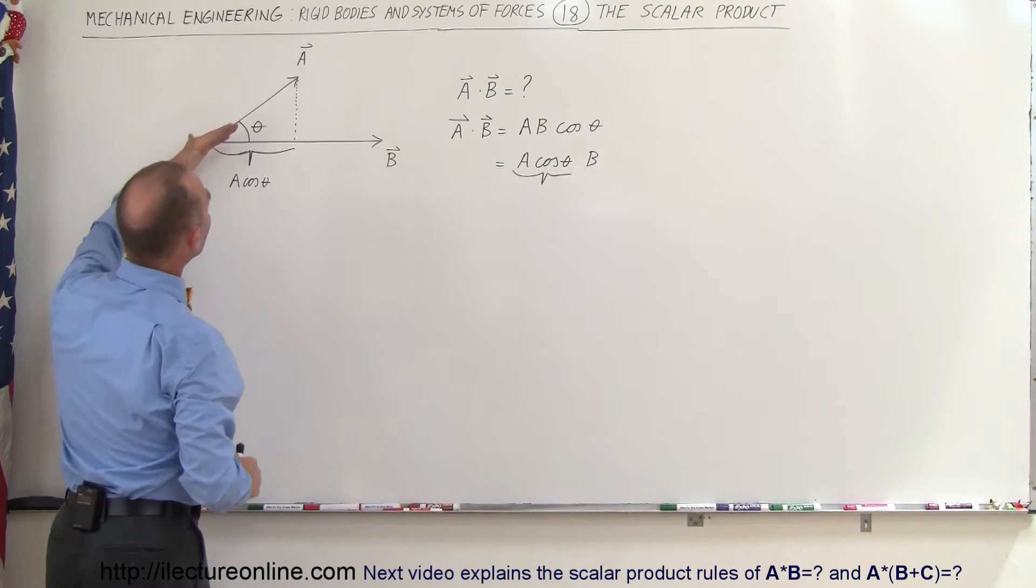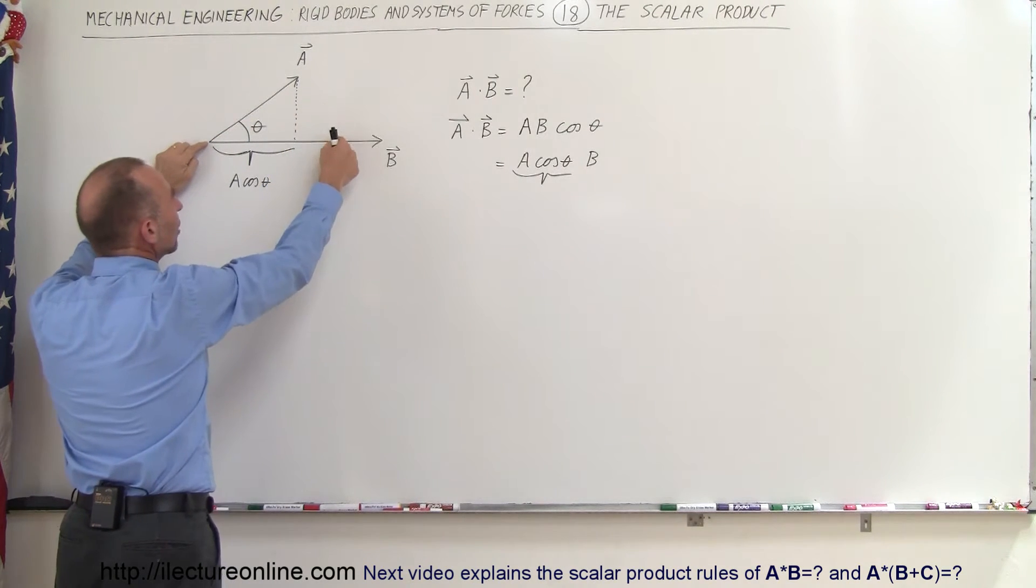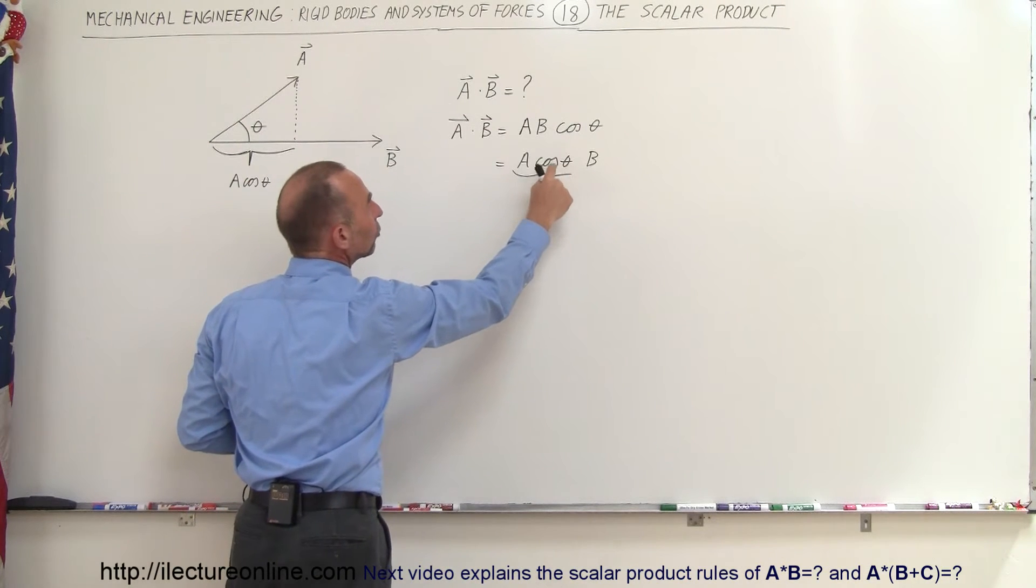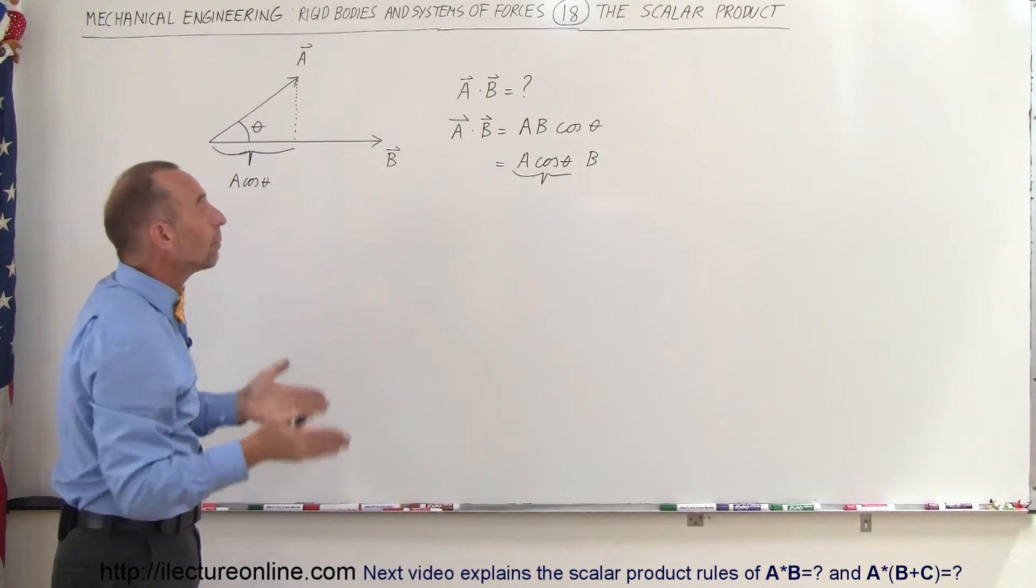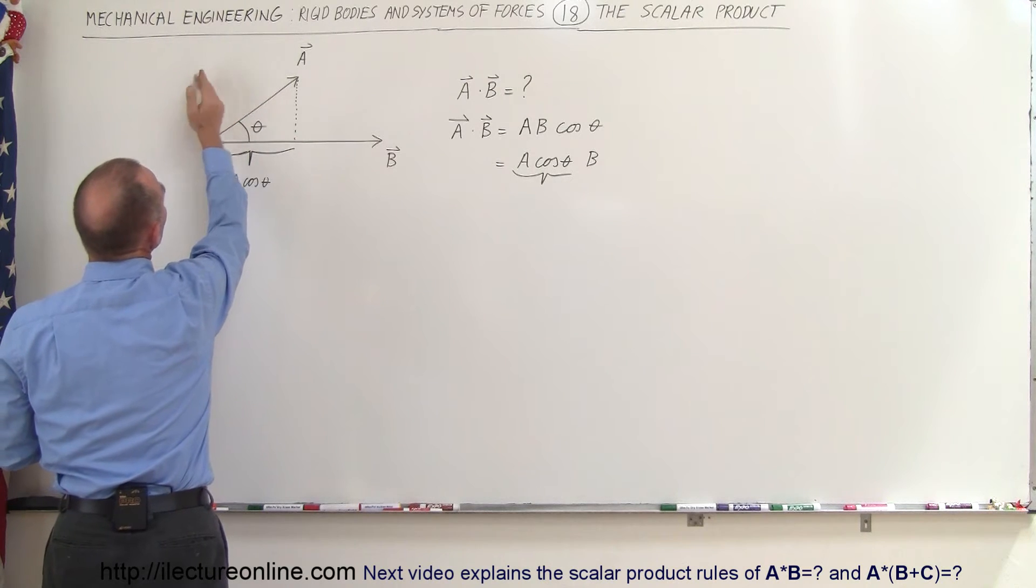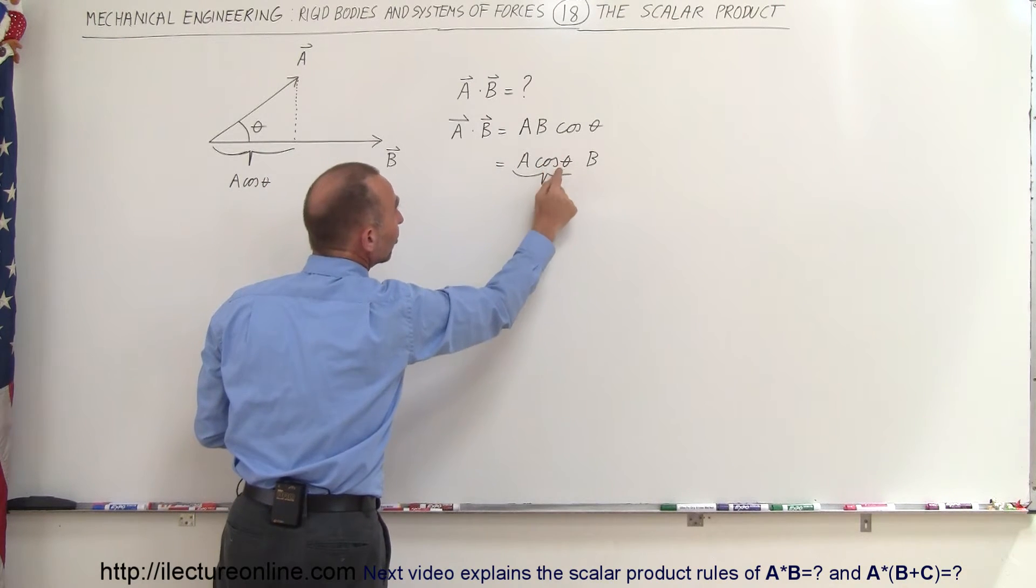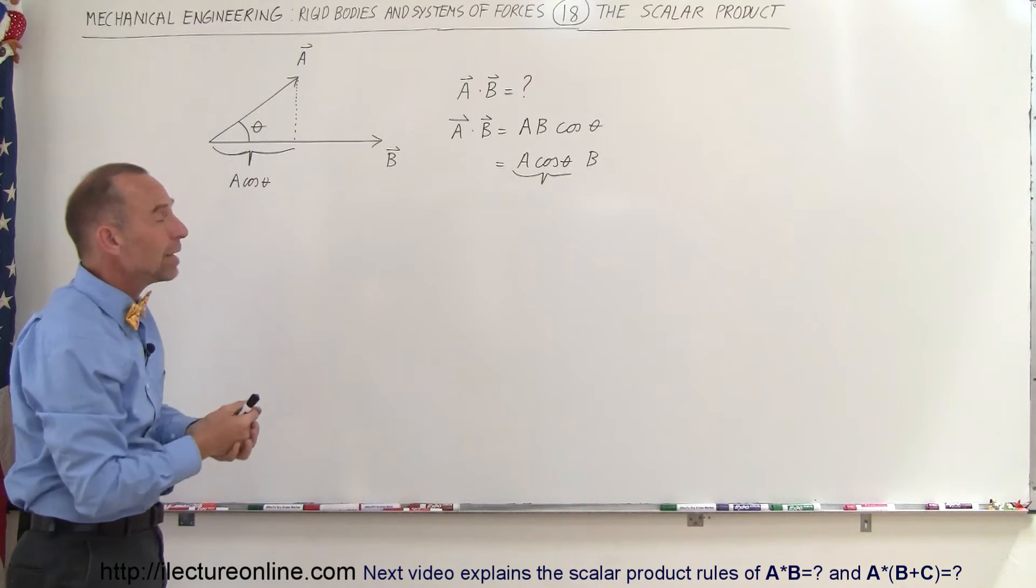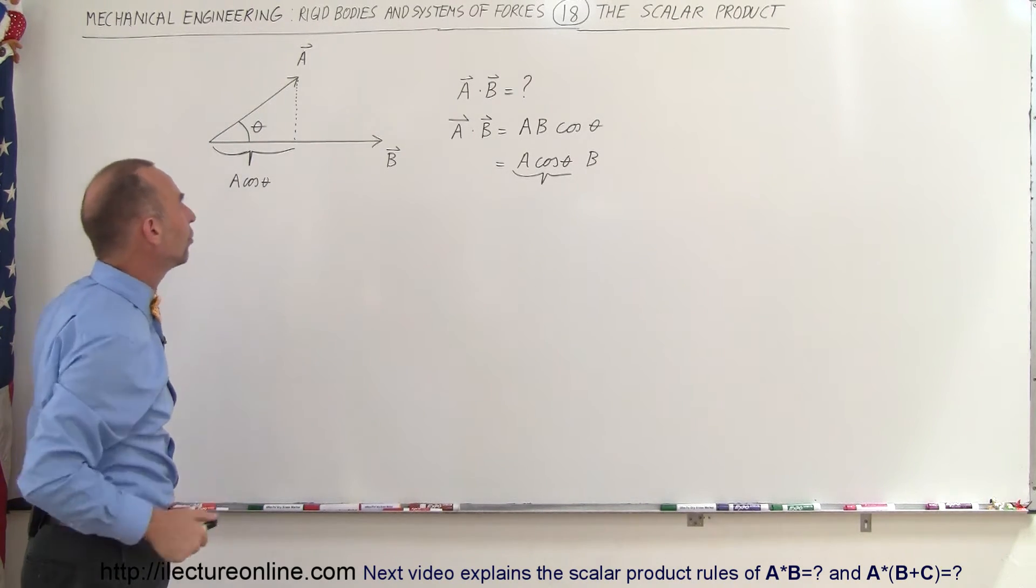Notice when theta goes to zero, then the projection here is equal to the length of A. In other words, if theta is equal to zero, the cosine of theta is one, and we get A times B. It's simply the magnitude of A times the magnitude of B. On the other hand, if the angle becomes 90 degrees, then the projection of A onto B is zero, because the cosine of 90 degrees is zero, and therefore, A dot B, or the scalar product between A and B, is going to give you a zero for an answer, because the projection of A will be zero onto B.